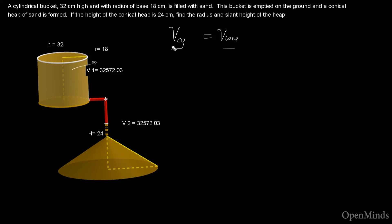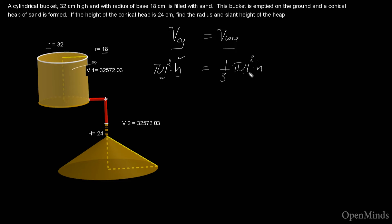The volume of the cylinder is π × r² × h. For the cylinder, h = 32 and r = 18. The volume of a cone is (1/3) × π × r² × h. For the cone, let me use r_c for the cone's radius and the cone's height h = 24.